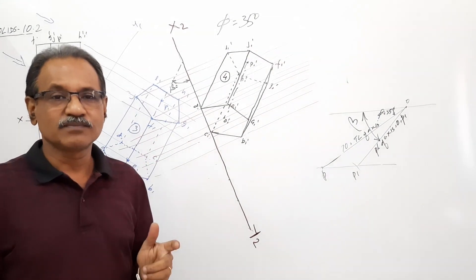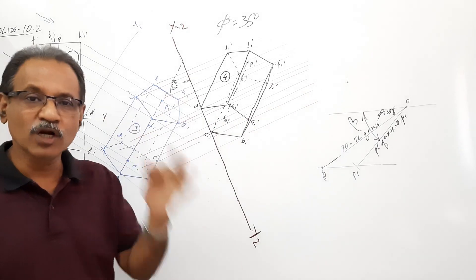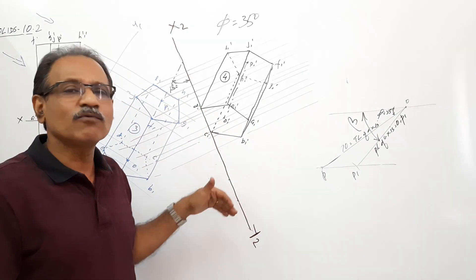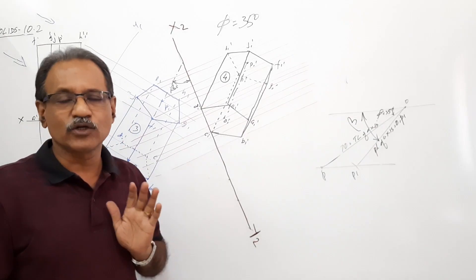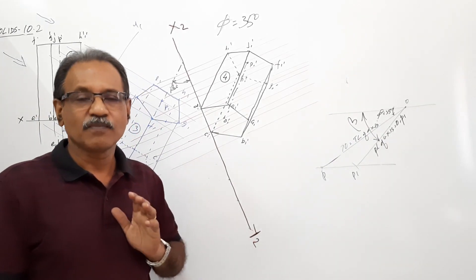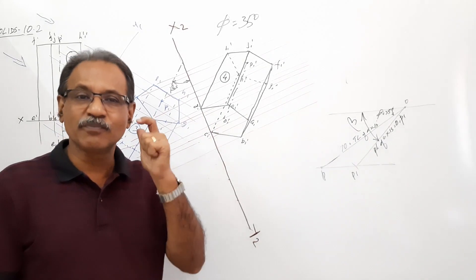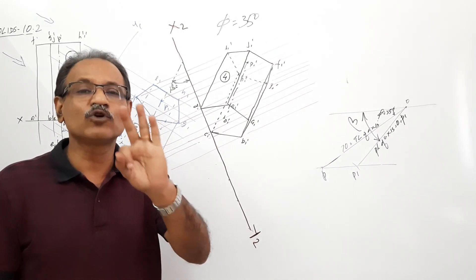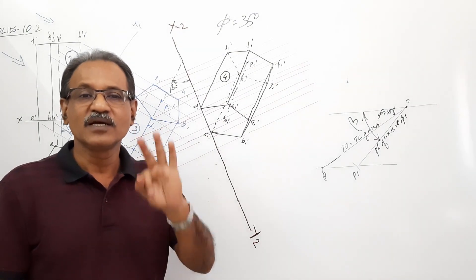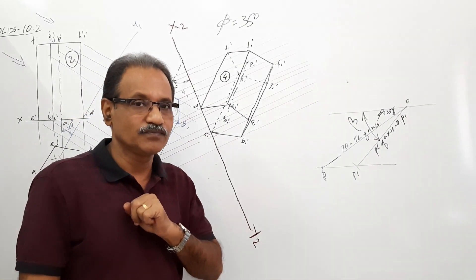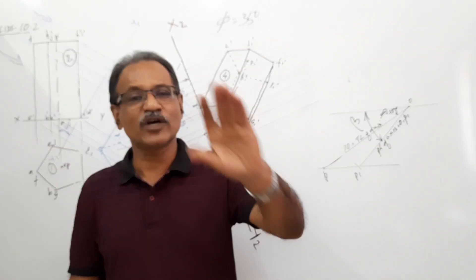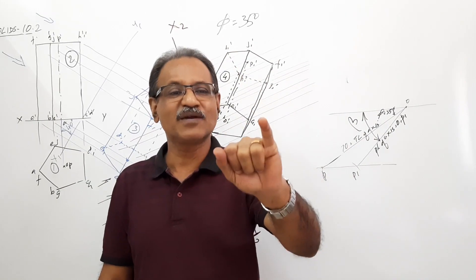These three problems can come for all prisms and all pyramids wherever there is an edge of base. One is drawn by auxiliary method, one is drawn by redrawing method. Since prisms and pyramids have base edges, these three question possibilities come — for triangular prism, triangular pyramid, square prism, square pyramid, pentagonal pyramid, and hexagonal pyramid.